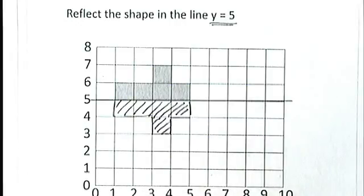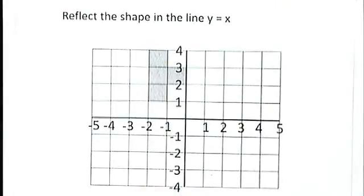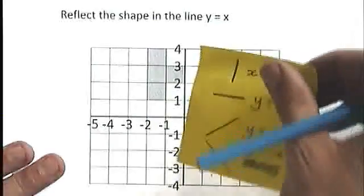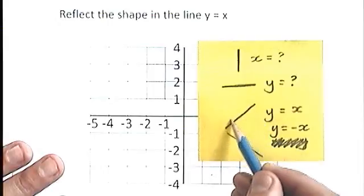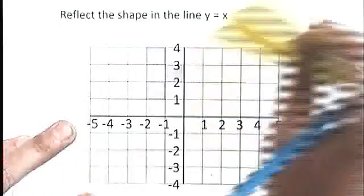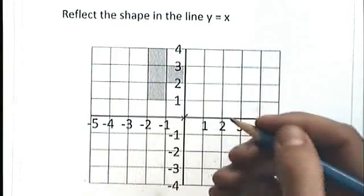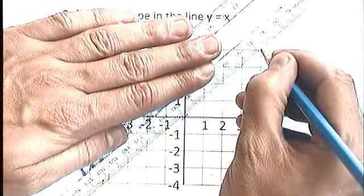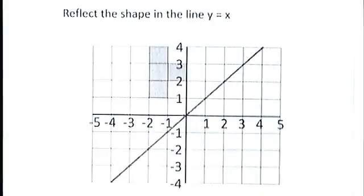Let's have a look at a slightly more tricky one now. This time I've got to reflect the shape in the line y equals x. Try to remember what those shapes of those four different graphs I showed you were. Here they are. y equals x looks like this. It's a diagonal line. And it passes through 0, 0. So the line of reflection that we're looking for is this one. Like that.